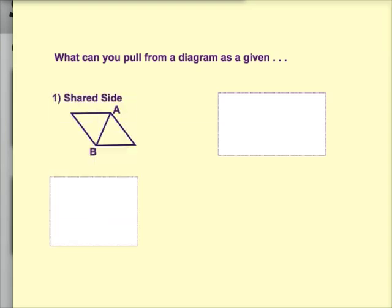So when we have two triangles that share a side, then we can use that shared side in our proof. So for example, triangle side length A, B, and B, A would be congruent to itself.